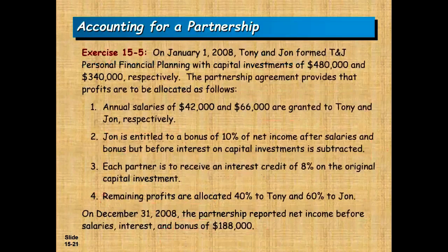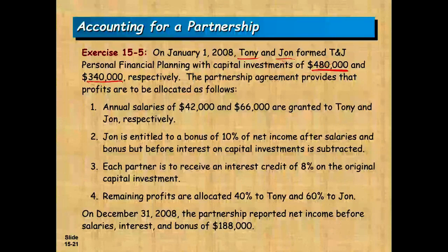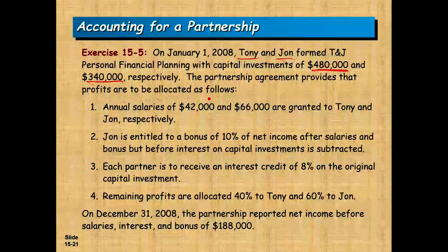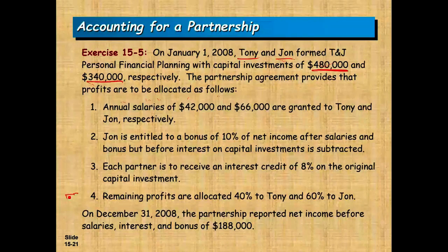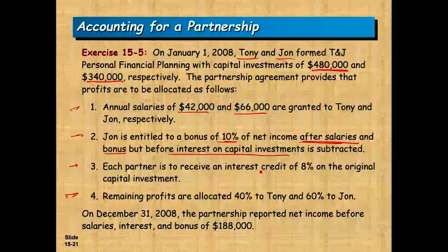The best way to illustrate this is to work an example. On January 1st, Tony and John formed TNJ Personal Financial Planning with capital investments of $480,000 and $340,000 respectively. The partnership agreement provides that profit and losses are allocated as follows — four levels of allocation. First, annual salaries of $42,000 and $66,000 are granted to Tony and John respectively.